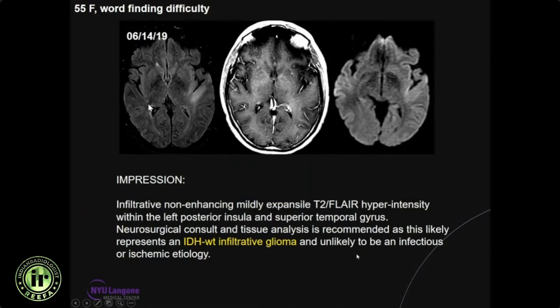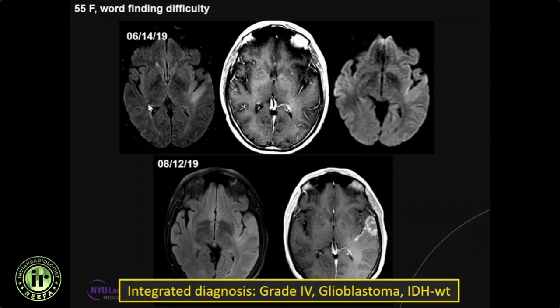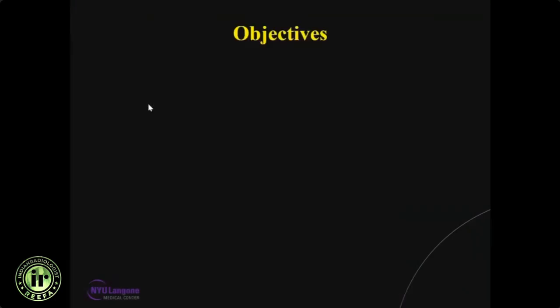I'll come back during my lecture to explain why I would write an impression like that. There is a reason to do that because these are aggressive tumors. On follow-up, the tumor is enhancing and showing much more aggressive imaging features. The tumor was partially resected and the integrated histological diagnosis showed this is a WHO grade 4 glioblastoma IDH wild-type. That's an important aspect of why we should be dictating cases with genomic information integrated into our reports.